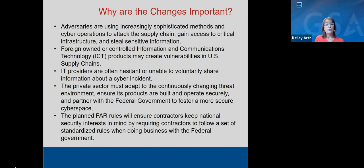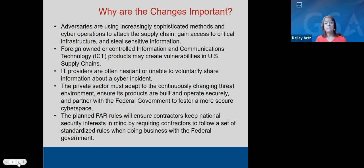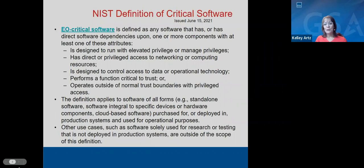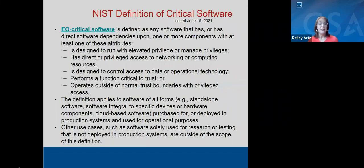The plan for our rules will ensure contractors keep national security interests in mind, and there's also language in an OMB memo making clear that it's not just a requirement on the prime, but there's a requirement to flow down to all the subs. Critical software is defined based on elevated privilege or software that manages privileges, but it also includes those that control access to data or operational technology. It's a broad definition that applies to all forms of software, except for software used solely for research or testing in a closed environment.